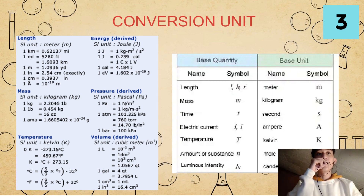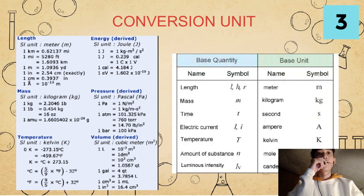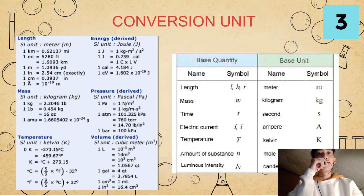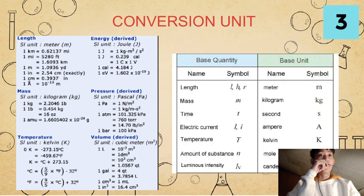For our energy, our SI unit is Joule or J. For every 1 Joule, there is 1 kilogram times m squared over s squared. For every 1 J, it is equals to 0.239 cal, or 1 C times 1 V. For every 1 cal, there are 4.184 Joules. For every 1 eV, there is 1.602 times 10 raised to negative 19 Joules.